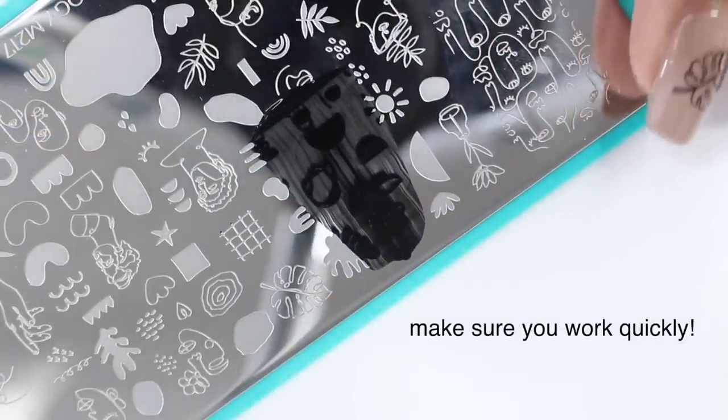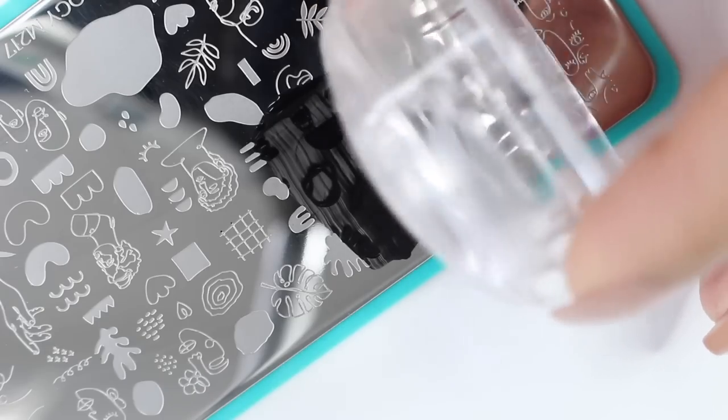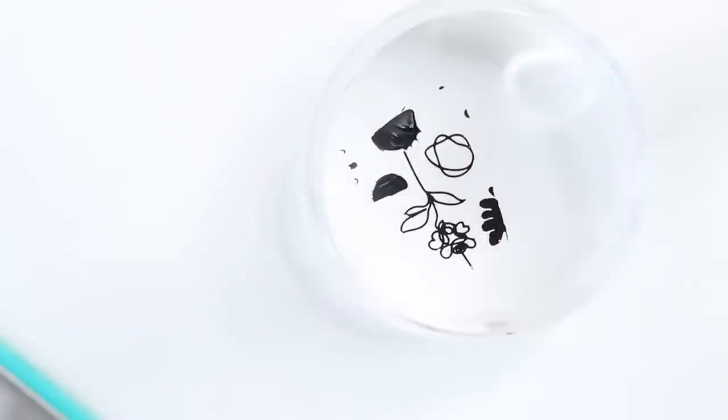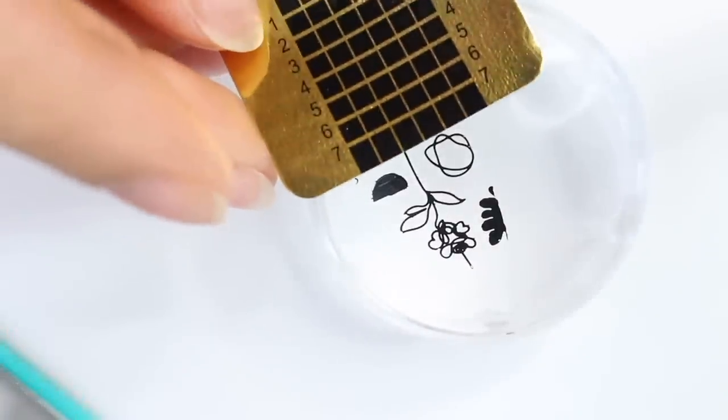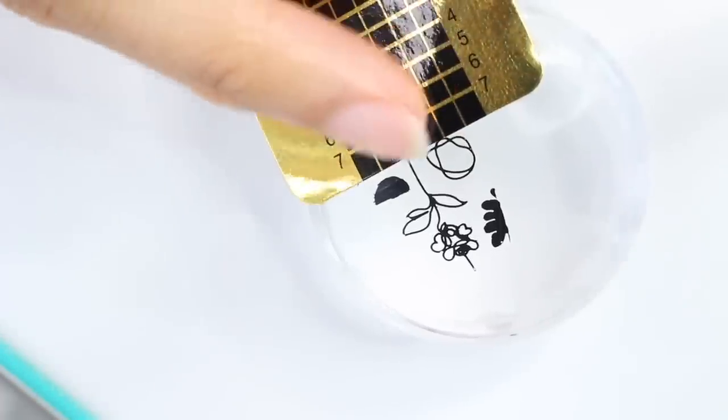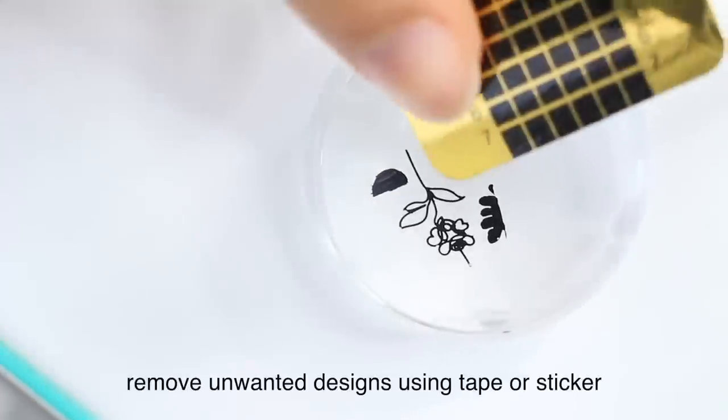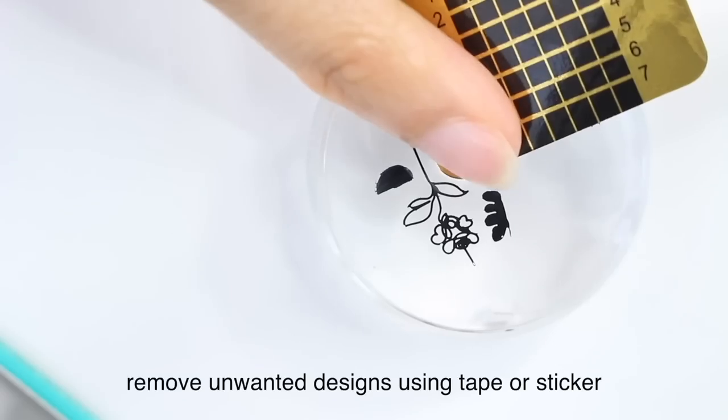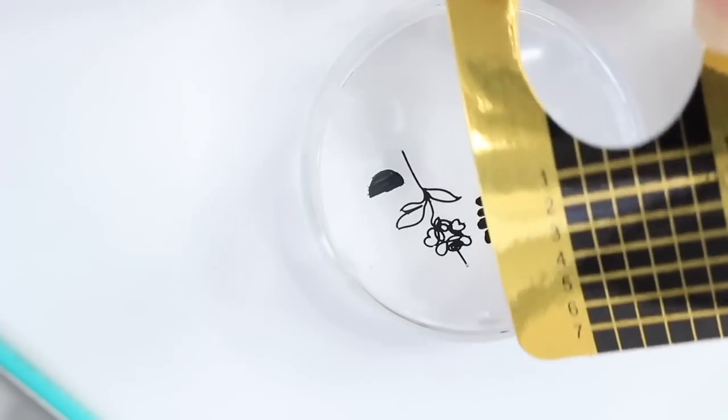So don't take your time. Make sure all your materials are right there, cleaned off and ready to use, because if you wait too long the polish won't scrape right or it won't transfer onto your nail because it will dry. So even this step where I'm removing the other shapes around, I'm working pretty quickly just to get it off and then stamp it onto my nail.